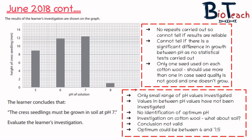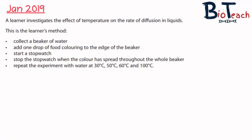The next experiment investigates the effect of temperature on the rate of diffusion in liquid. The method involves collecting a beaker of water, adding one drop of food colouring to the edge of the beaker, timing how long it takes for the colour to spread throughout the whole beaker, and repeating this at different temperatures. This is quite a generic method — it doesn't say how temperatures will be created, how much water goes in the beaker, or how precisely the spread of colour is judged.